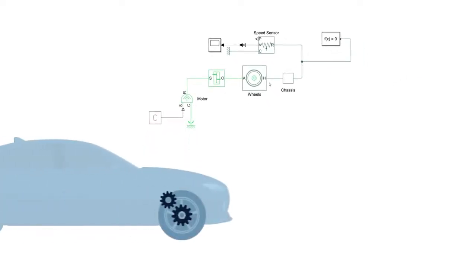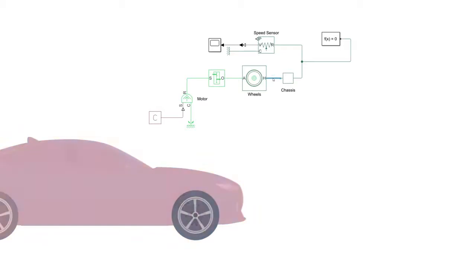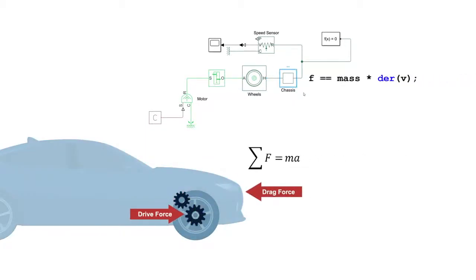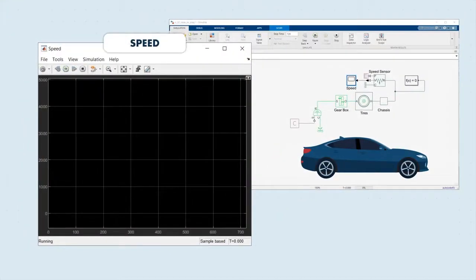The components of our model are connected to each other just like they are in the actual system. The lines connecting the components represent equations that describe how the components interact with one another. Each component also has equations describing its behavior. Simscape derives the equations for the entire system and solves them at each time step during the simulation. Let's run the simulation and see what happens.